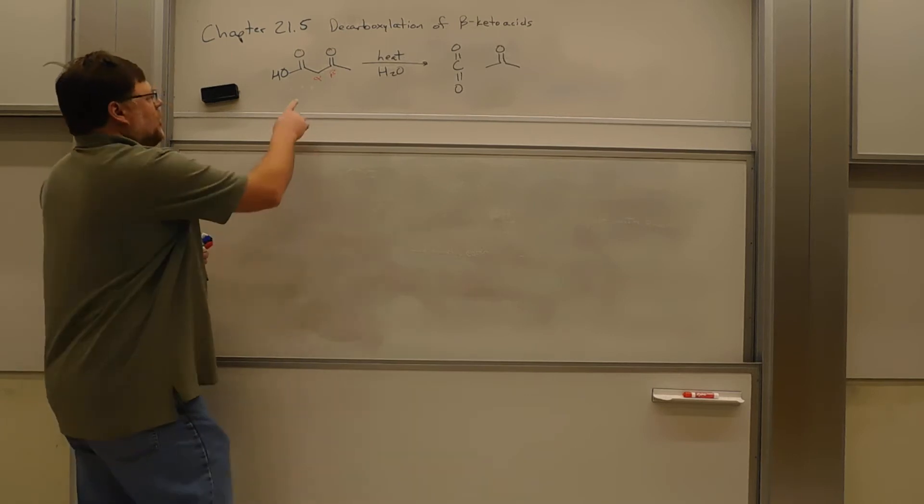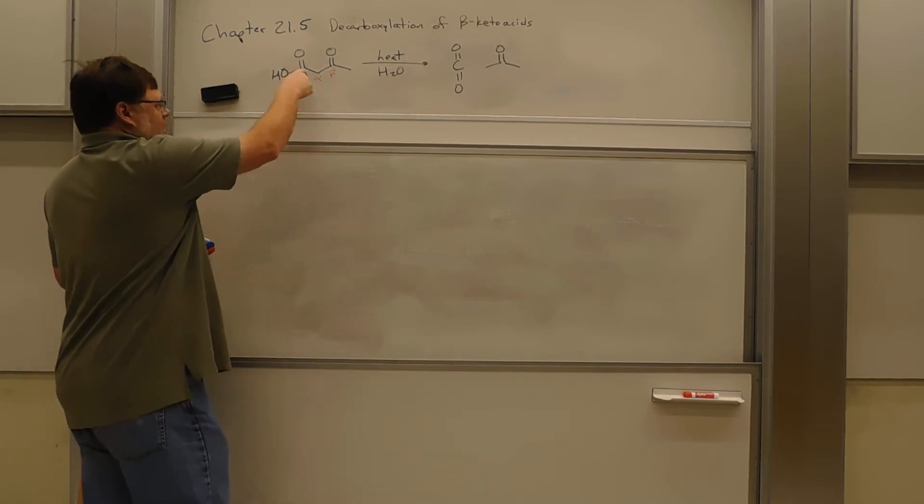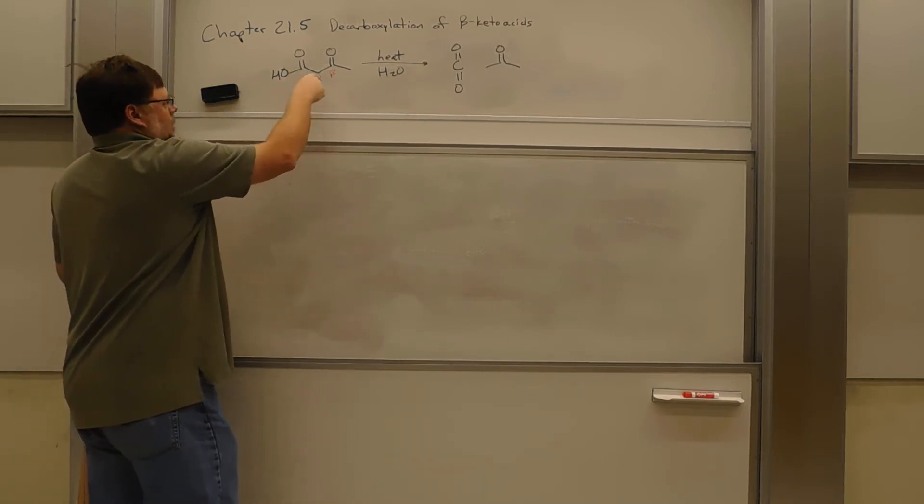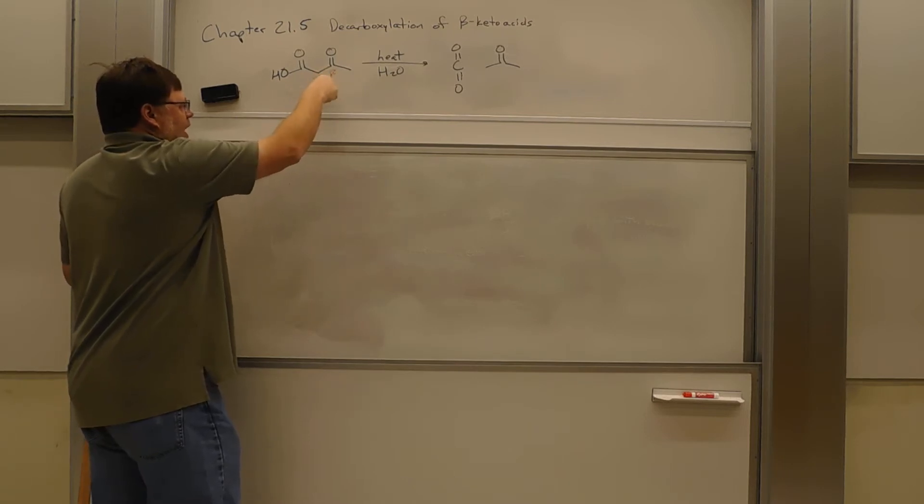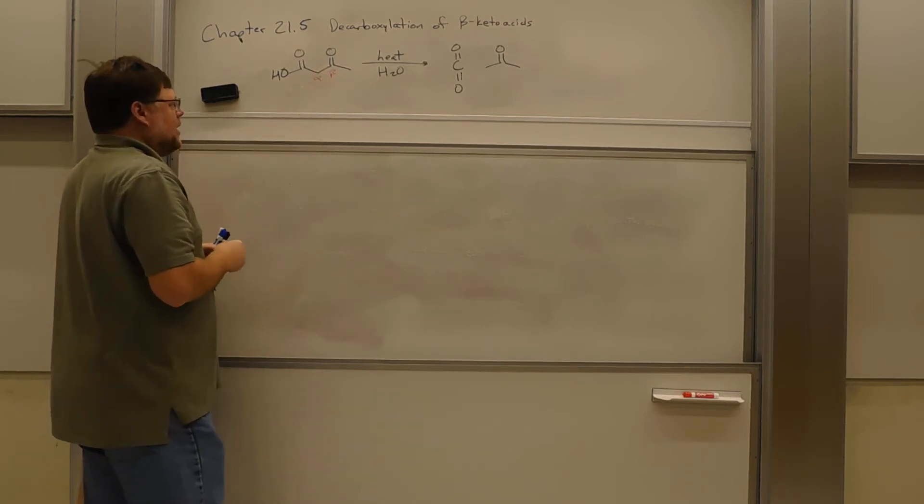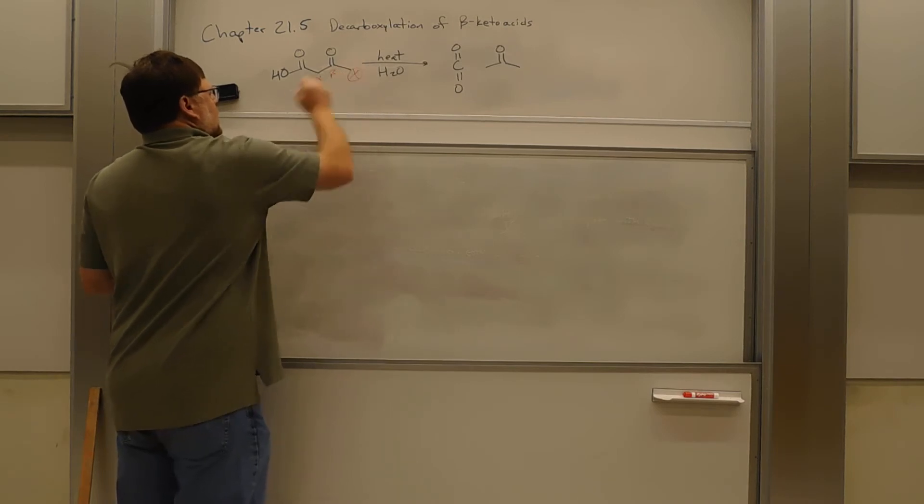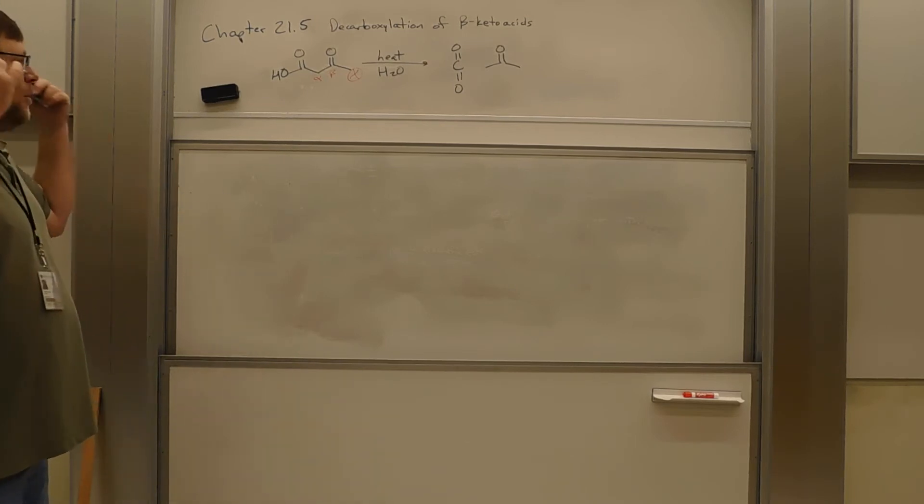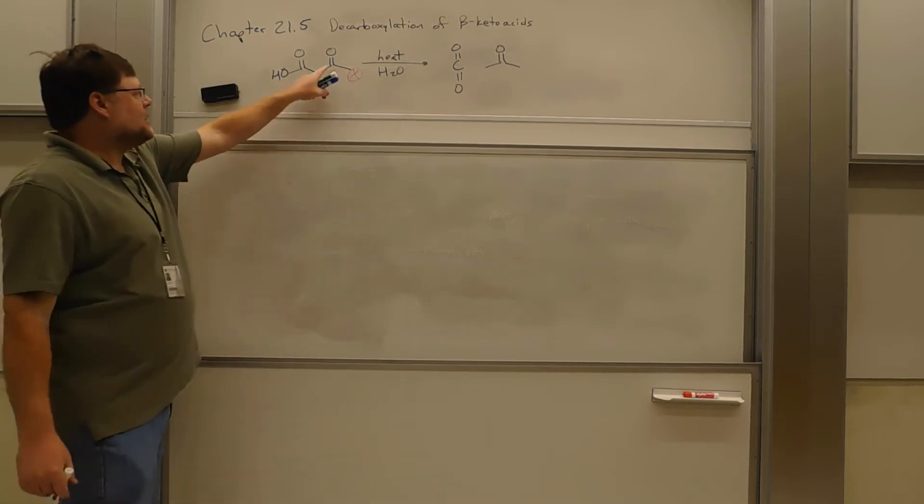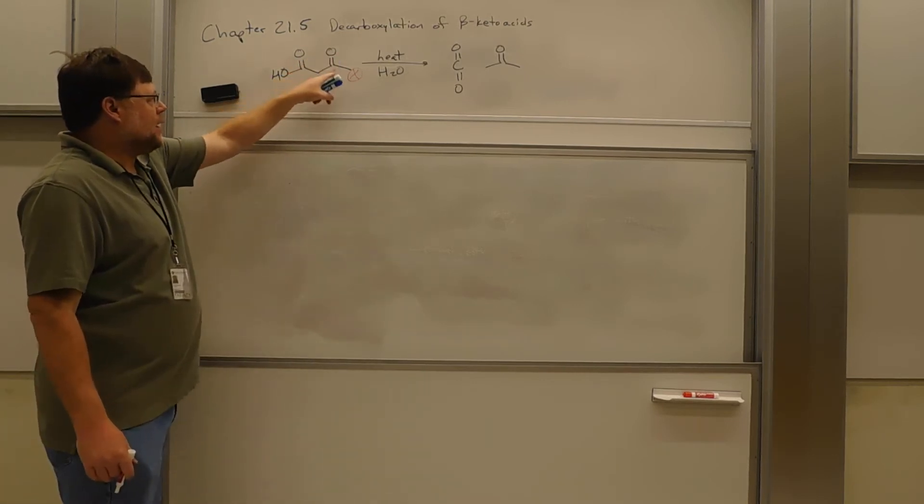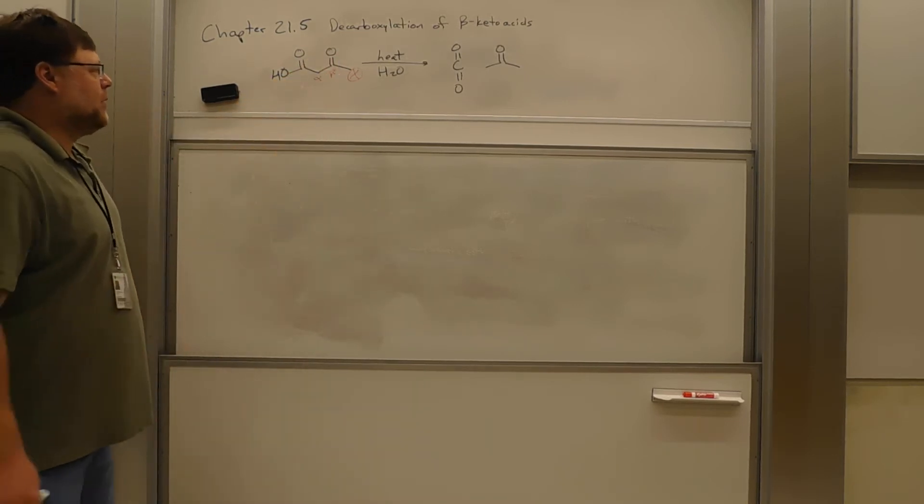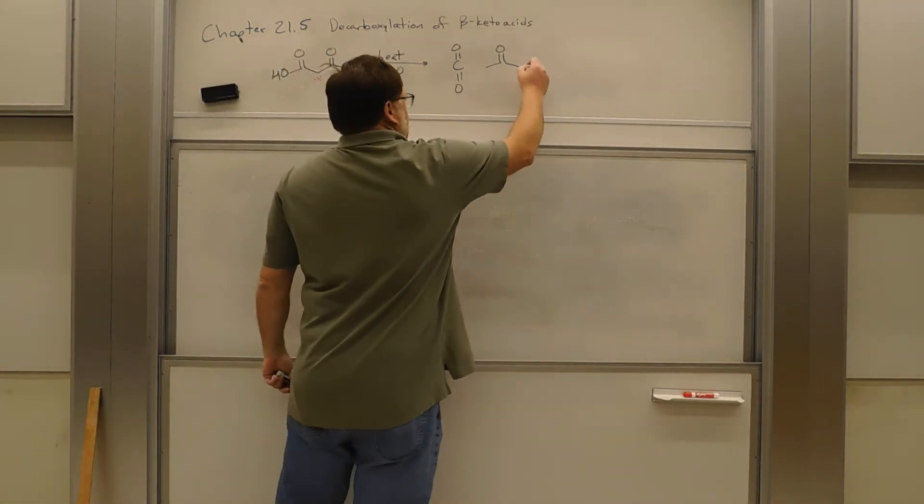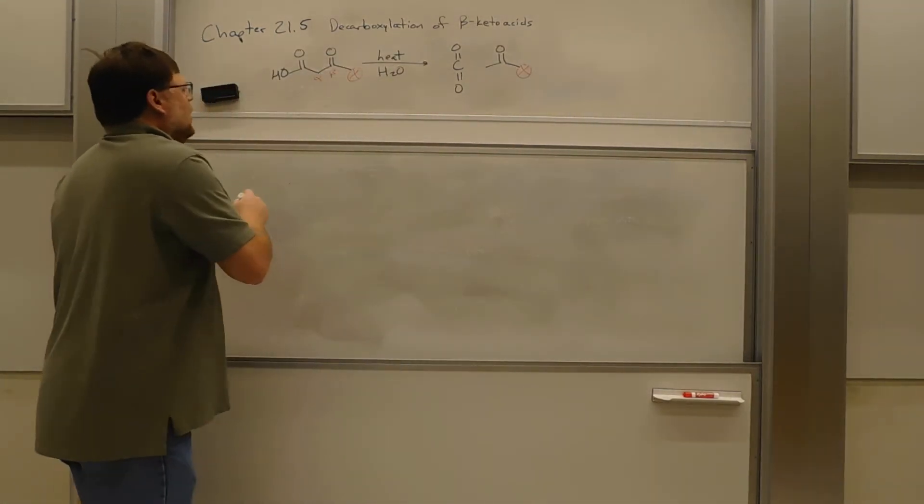A beta-keto acid is, so carboxylic acid here, right? Alpha carbon, beta carbon. If that beta carbon is a carbonyl, and it can actually be any kind of carbonyl, it can be an aldehyde, a ketone, an ester, an amide, a carboxylic acid, a thioester, whatever. As long as there's a carbonyl here on the beta carbon, this reaction works really well.